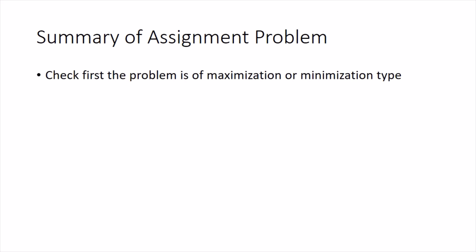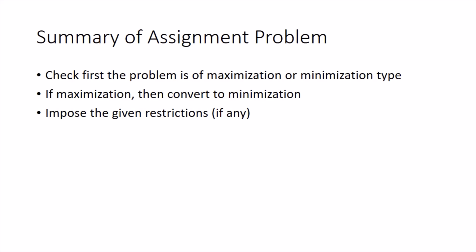B goes to Y — that was the additional given information. While computing Z we must keep that in mind. To summarize the complete procedure for assignment problems: first, determine whether the problem is maximization or minimization. If minimization, nothing to do; if maximization, convert it to minimization as explained. Then read the statement again to identify whether any restrictions are given — this step is not mandatory as restrictions aren't in every question, but if they are, impose them at this step.